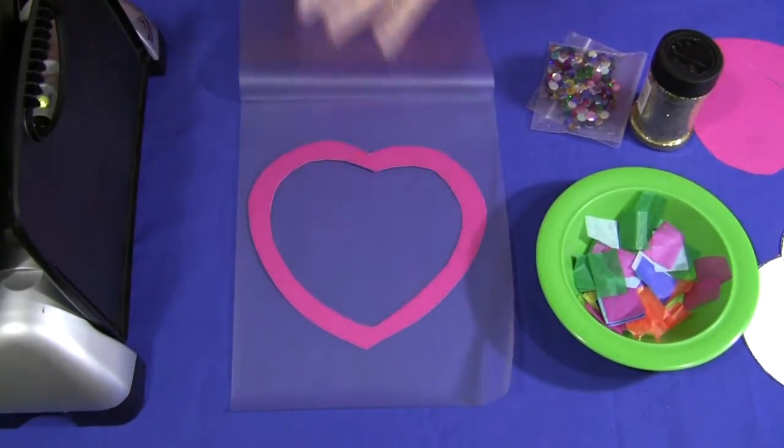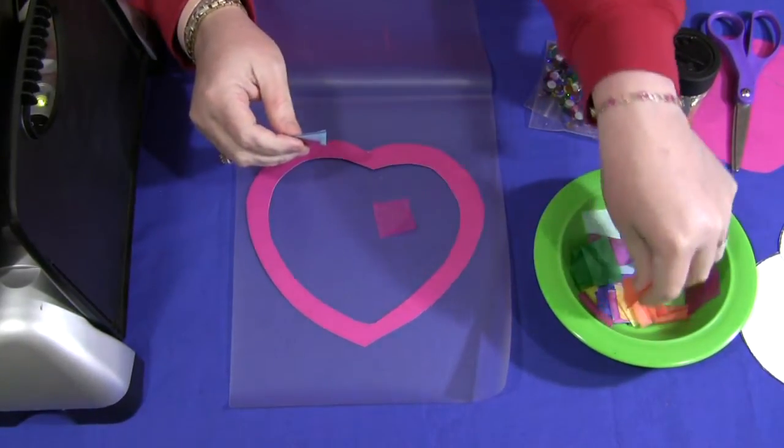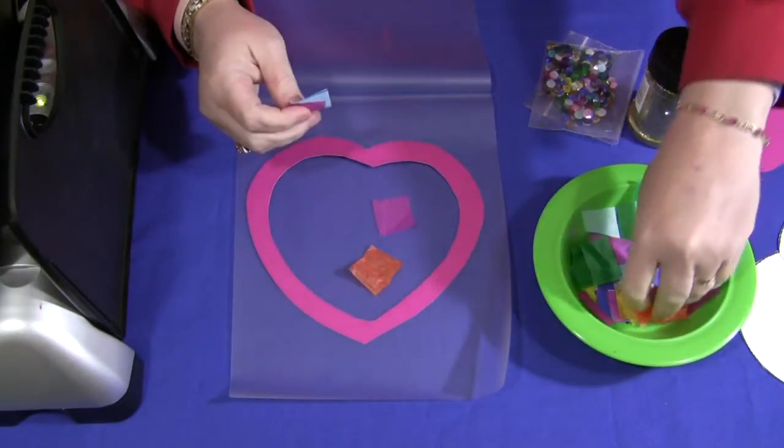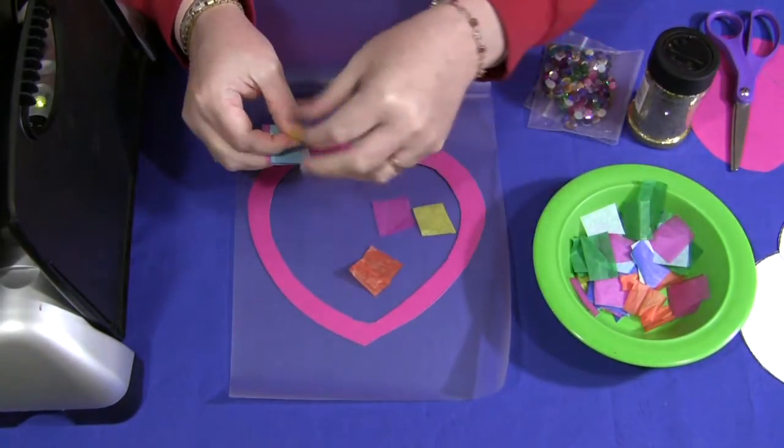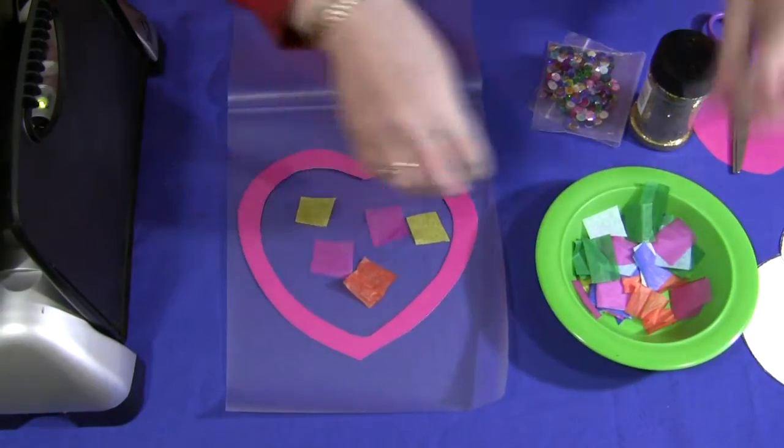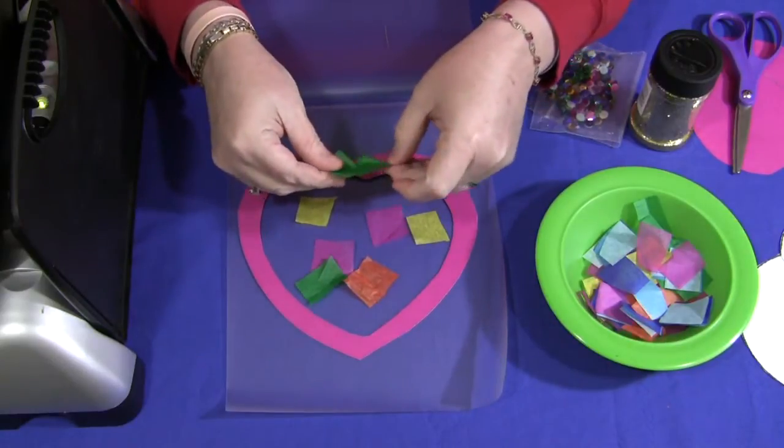And then you're just going to decorate the inside. And we usually use different colors of tissue paper. That's very easy for children. They can cut it up or tear it up. And you just place that inside the heart pattern itself. And fill it up. You can put as little in as you want or as much in as you want.